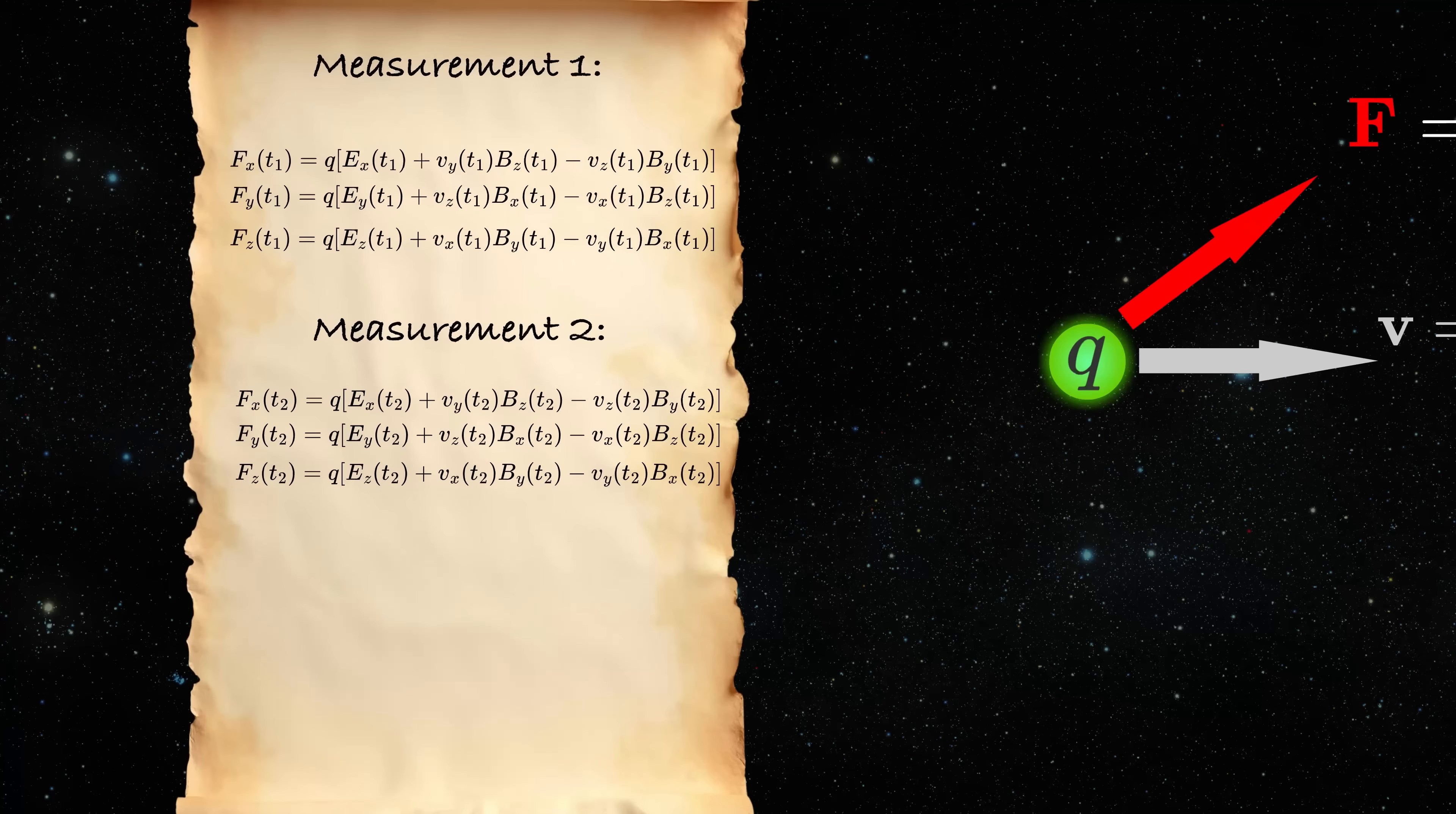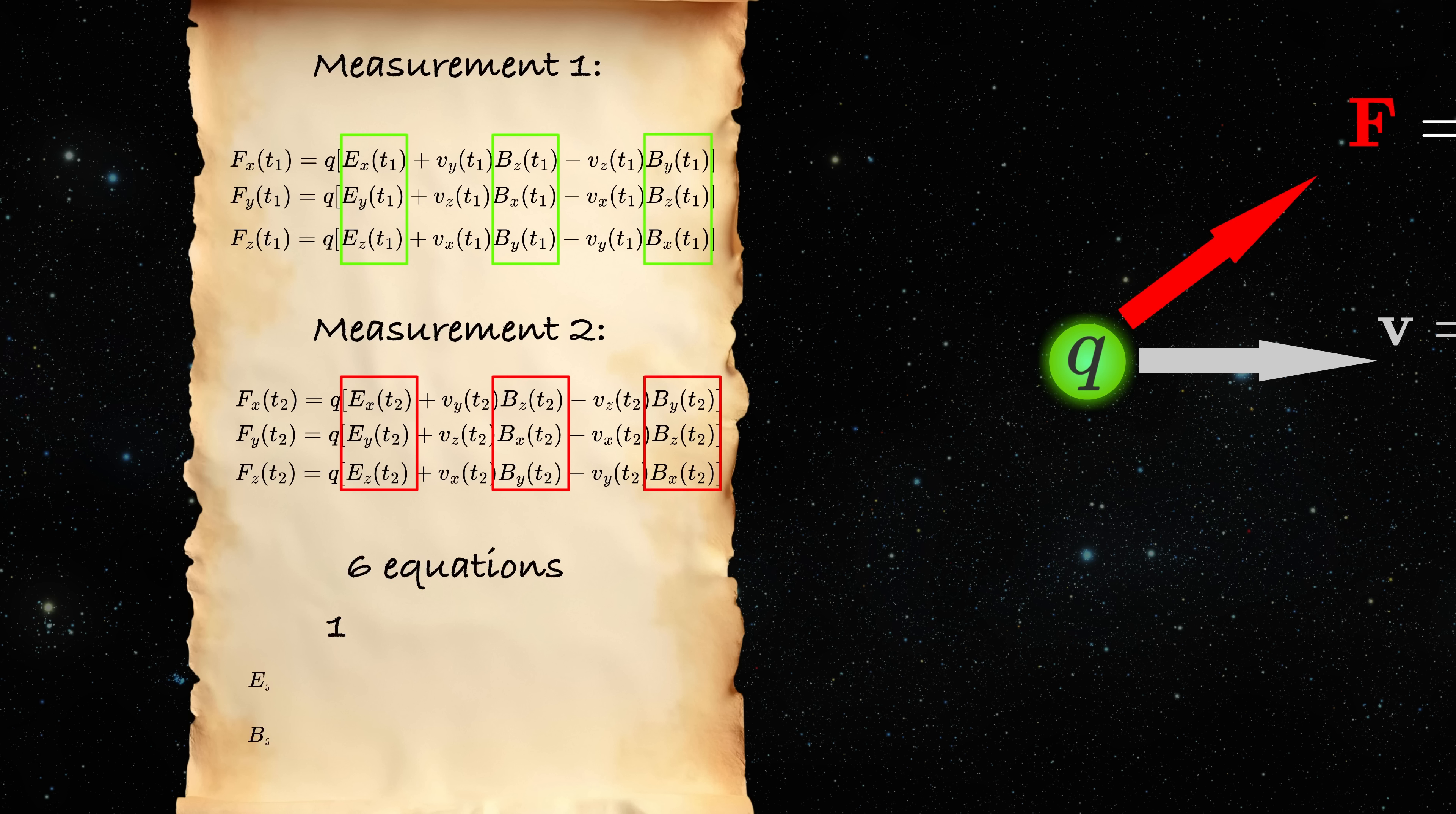The problem is that this only works if we know that these electric and magnetic fields are not changing with time. Because if they were, then these would not be the same, and we will be in a situation of six equations but 12 unknowns. Which is again, underdetermined.